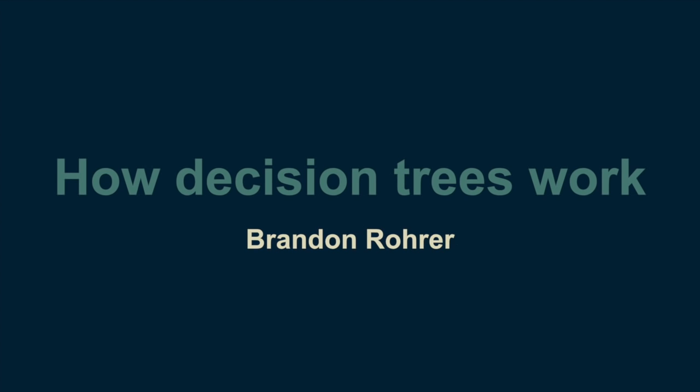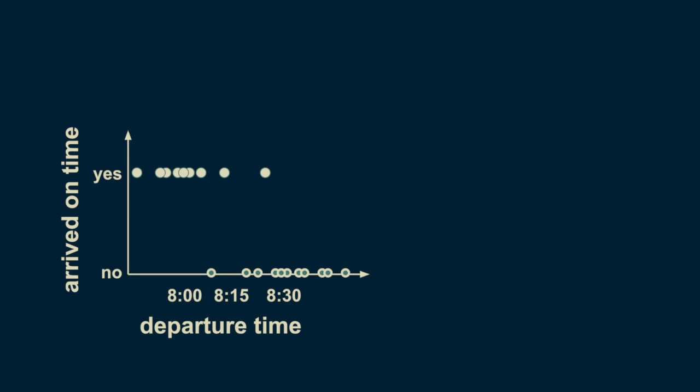The concept behind decision trees is refreshingly straightforward. Imagine creating a dataset by recording the time you left your house and noting whether you arrived at work on time. Looking at it, you can see that for the most part, departure times before 8:15 result in punctuality, and departure times after 8:15 result in tardiness.